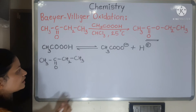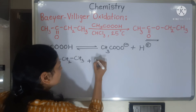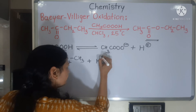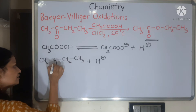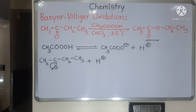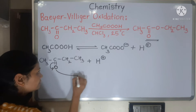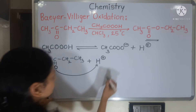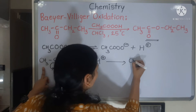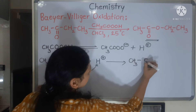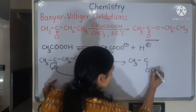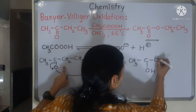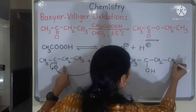So when we start the mechanism in the presence of H⁺, the partially negative oxygen grabs the H⁺. Now in the intermediate we have CH3-C(OH⁺)-CH2CH3, where the carbon of the carbonyl becomes positively charged.